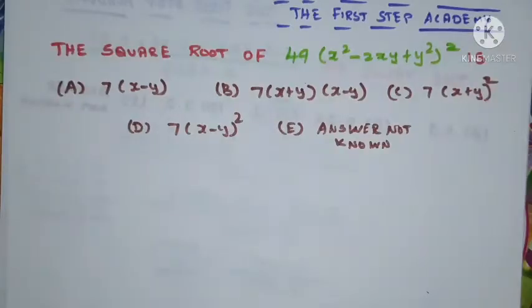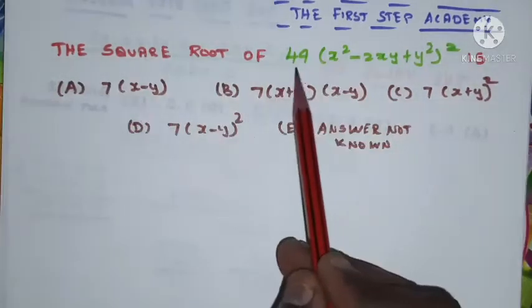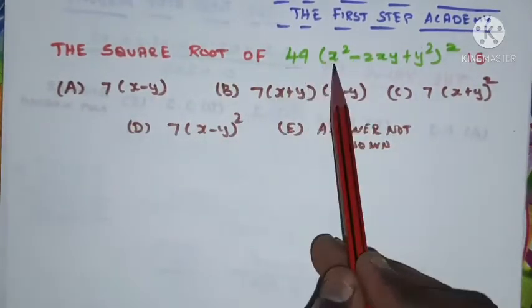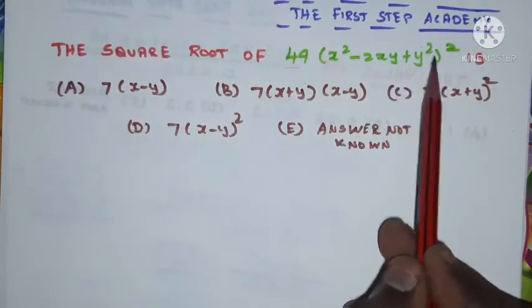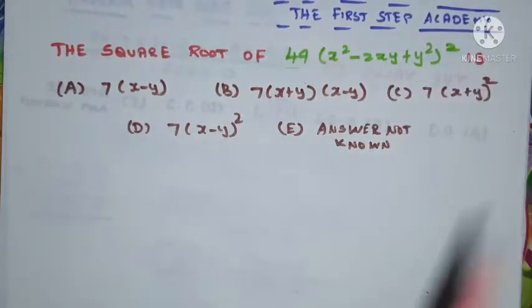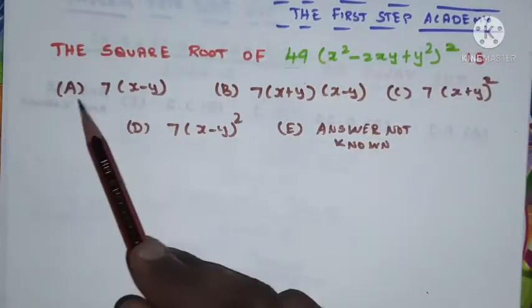Okay, now we are going to find the square root of 49 into x squared minus 2xy plus y squared whole squared. The given options are: option A, 7 into (x minus y); option B, 7 into (x+y)(x-y).